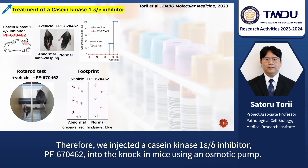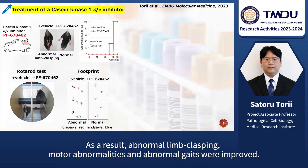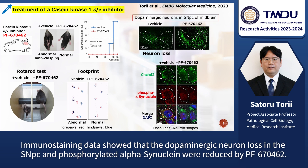Therefore, we injected a casein kinase-1-epsilon delta inhibitor, PF670462, into the knock-in mice using an osmotic pump. As a result, abnormal limb clasping, motor abnormalities, and abnormal gait were improved. Immunostaining data showed that dopaminergic neuron loss in the SNpc and phosphorylated alpha-synuclein were reduced by PF670462.